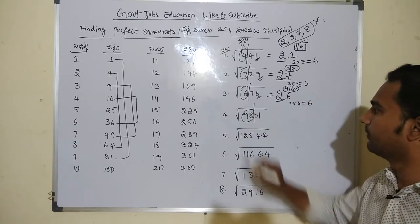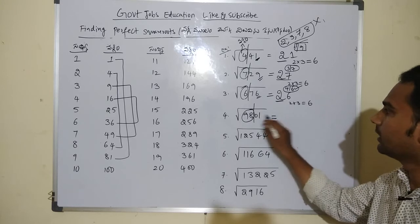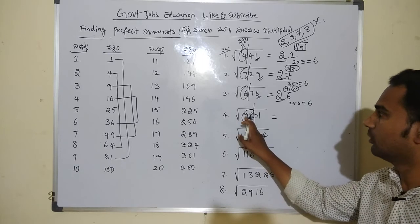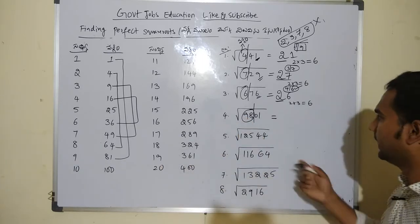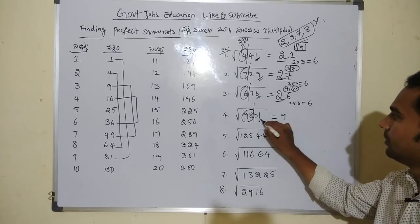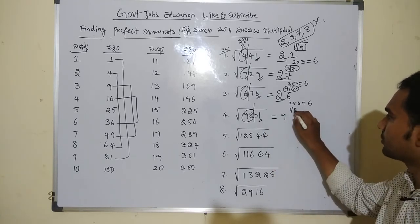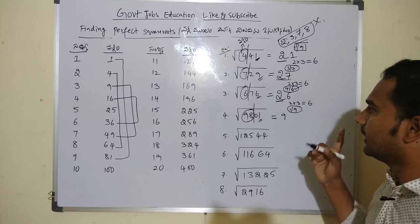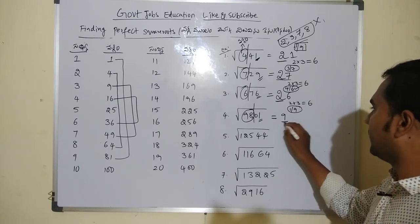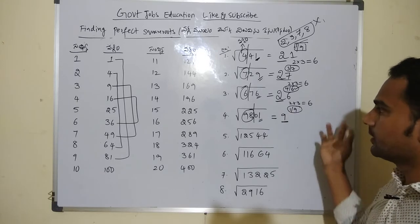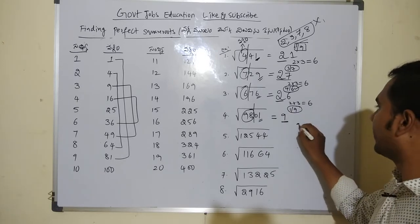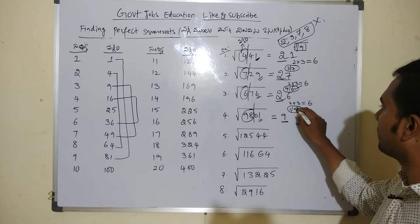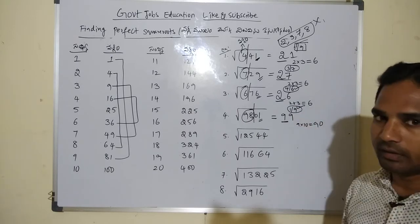Problem: 9801. Left side is 98. Perfect squares: 7 square is 49, 8 square is 64, 9 square is 81. The nearest perfect square is 81, so 9 is the root digit. Unit value is 1, giving candidates 1 or 9 — so 91 or 99. 9 multiplied by 10 is 90, and the number is 98 which is greater, so the answer is 99.